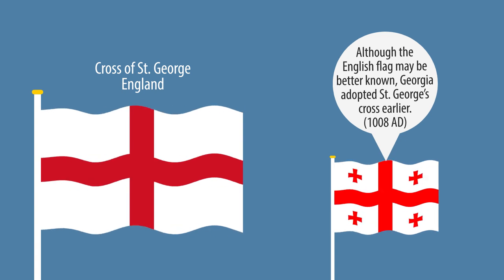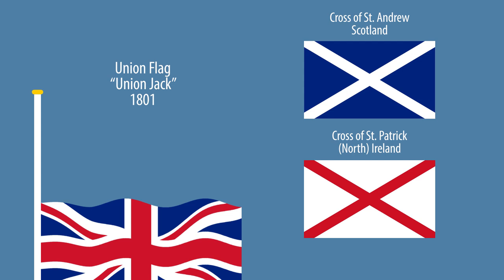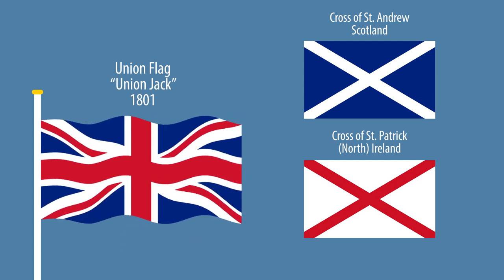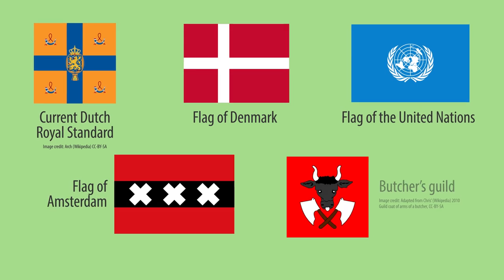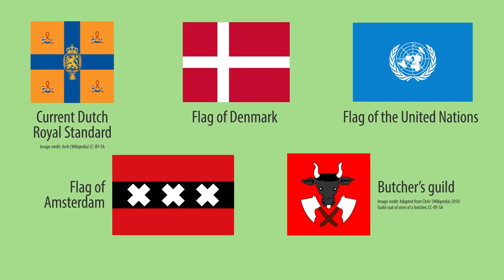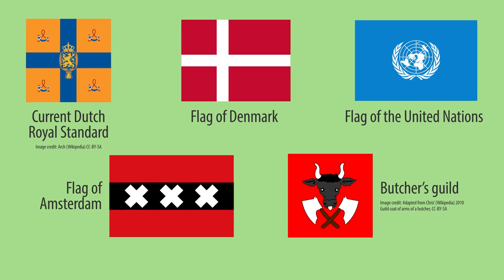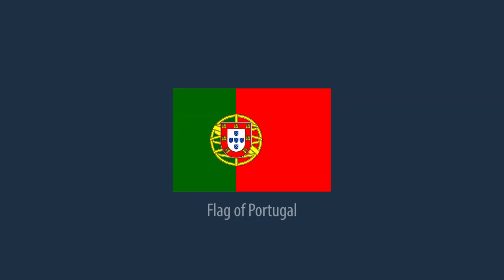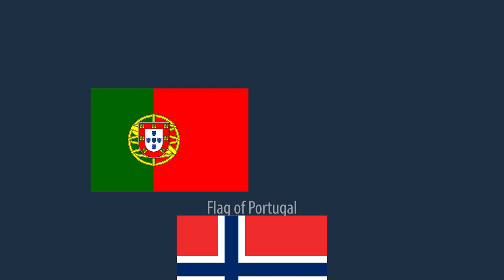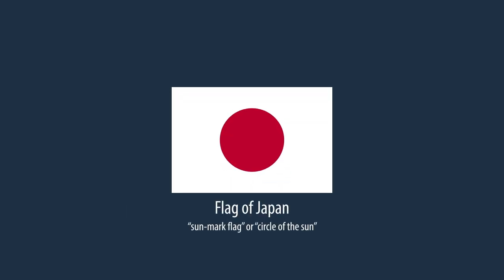Later, combining it with the cross of St. Andrew and the cross of St. Patrick, they formed the Union flag. Kings, countries, organizations, cities, guilds — all started to adopt flags. From this point on, national flags increasingly became part of nations' identities. Some flags were based on heraldry, on religious symbolism, or something else entirely.